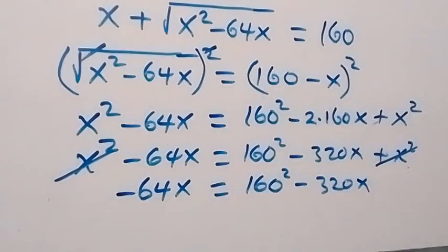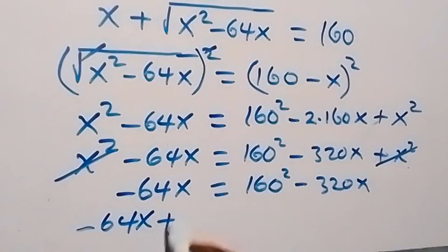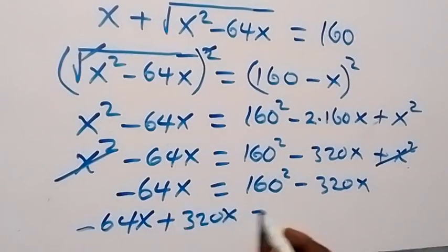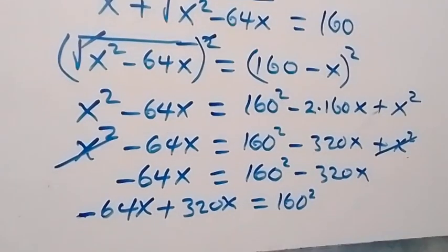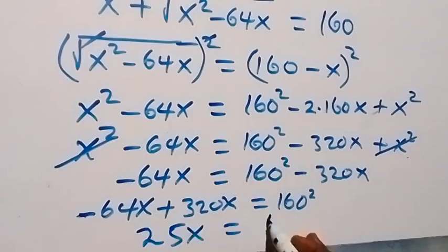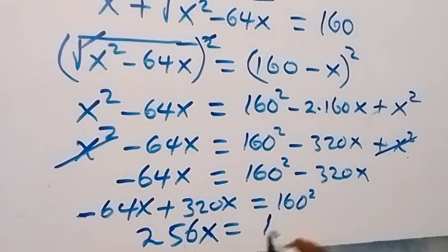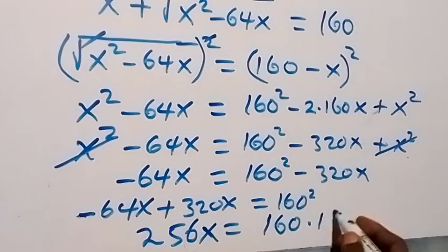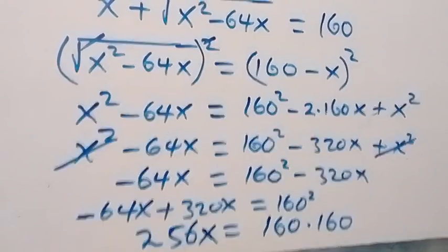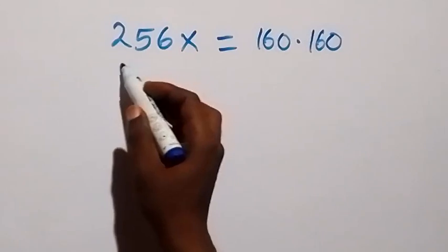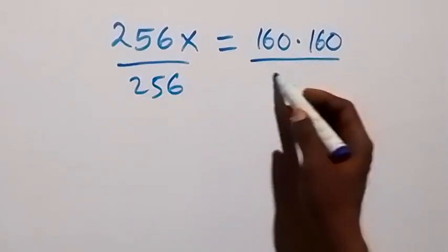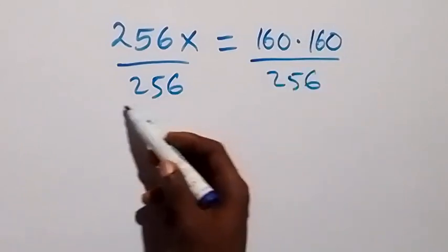Now we take the x terms to one side: −64x + 320x equals 160². That gives 256x equals 160². Then let's divide both sides by 256.